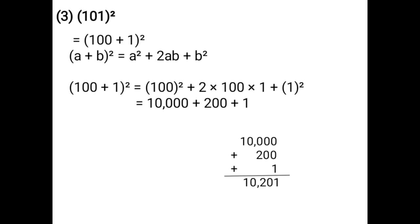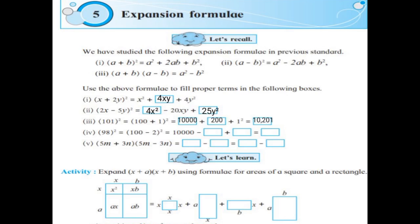Adding digit by digit: 0 + 1 = 1, 0 + 0 = 0, 0 + 2 = 2, 0 + 0 = 0, 1 + 0 = 1. That gives 10,201. The correct answer to write in the box is 10,201.